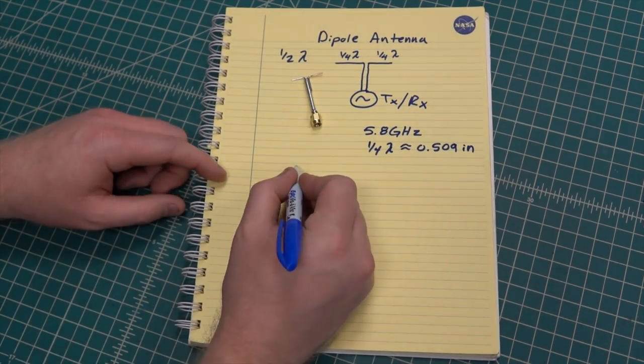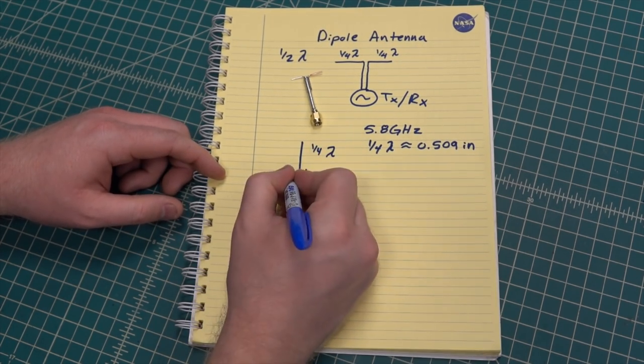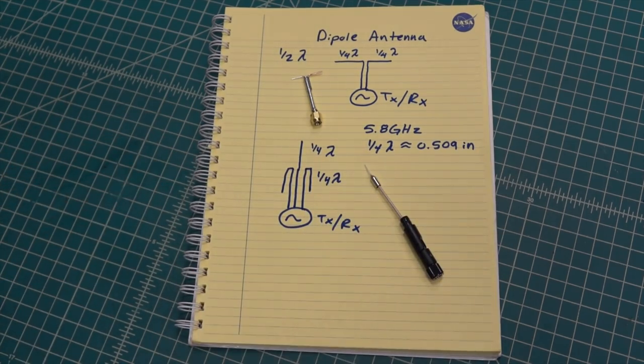Another common type of dipole is called a sleeve dipole and is constructed with a coax cable with quarter wavelength of the center conductor sticking out and a conductive sleeve soldered to the outer conductor and folded back over the coax.